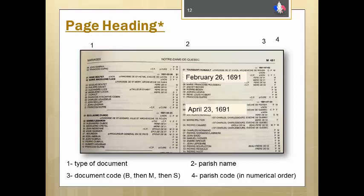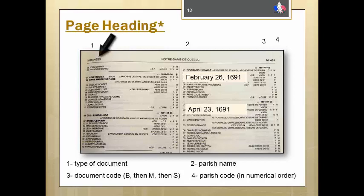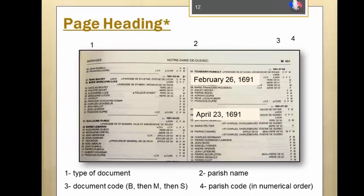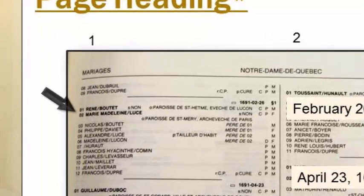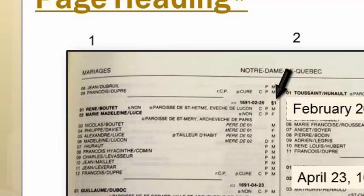When you follow the index to a page of records, you look chronologically for the parish number first, then for type of record, then for date. You will find headings like this one. This page is from the parish of Notre Dame de Quebec, which has the parish numerical designation of 451. This is a page of marriages with a document code of M for mariage. This first complete record is a marriage between Renée Boutet and Marie Madeleine Luce, which took place on February 26, 1691. This was the second marriage for that date, indicated by this symbol in the numeral 1. Records are presented chronologically by date, so it is easy to see, for example, if your ancestor might have died during an epidemic when many people from that parish died in a short period of time. It is very useful for social issues.